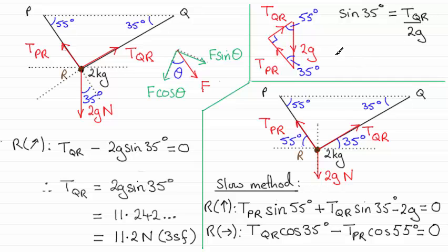Rearrange this to make the tension QR the subject, and it's going to be equal to 2g sine of 35 degrees. And that is the same calculation that we had here. So you can see it turns out to be 11.2 newtons to three significant figures.